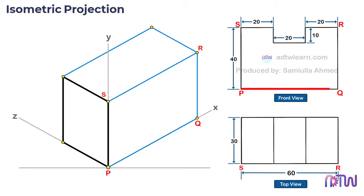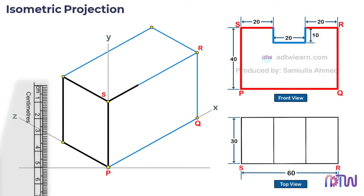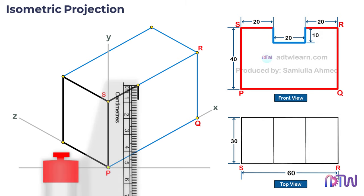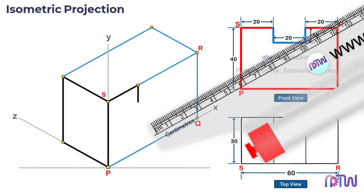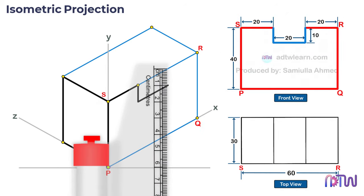Now we start drawing the details visible in the front view. We need to draw this slot on the front view plane. The distance from point S is 20 millimeters, so draw a line of 20 millimeters from point S. There is a 10 millimeter depth in this slot, so draw a 10 millimeter vertical line from this point. The width of this slot is 20 millimeters, so draw a 20 millimeter line parallel to the x-axis, then draw a 10 millimeter vertical line.